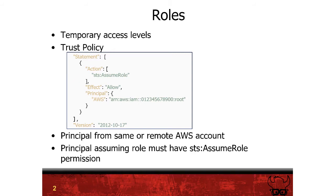This is the sample shown on screen in that block of JSON. In this case, anybody in account 012345678900 can assume the role — 'root' here refers not to a specific user but to the root of the account itself. This can be filtered down further from anyone in the account to specific users or roles. Additional special conditions can also be placed in the trust policy, such as requiring the user to have authenticated with MFA or to include a specific alphanumeric code with their API calls.